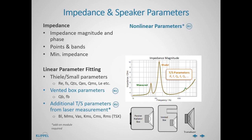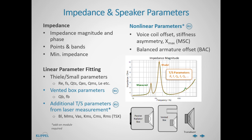Even powerful nonlinear parameters, such as voice coil offset, stiffness asymmetry, and Xmax for electrodynamic transducers, or balanced armature offset for balanced armature transducers, can be tested at the production line. This again is a unique feature of the Klipple QC.